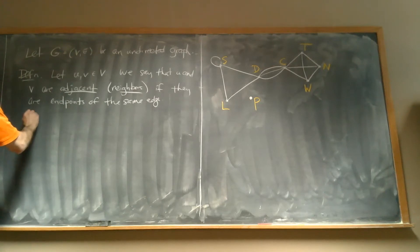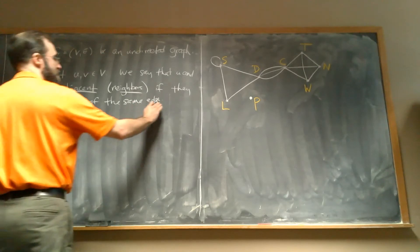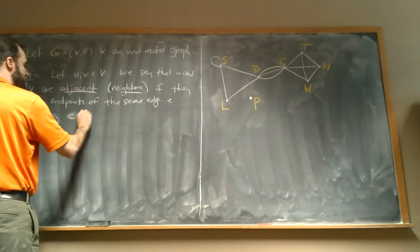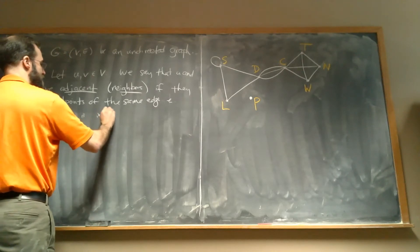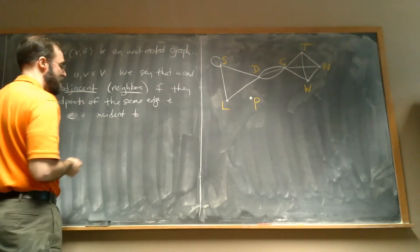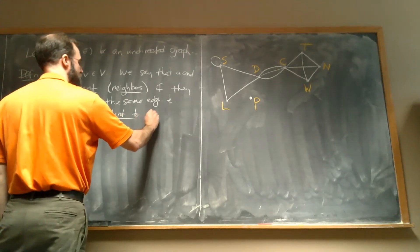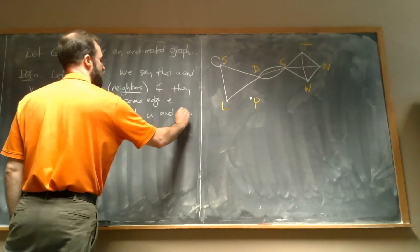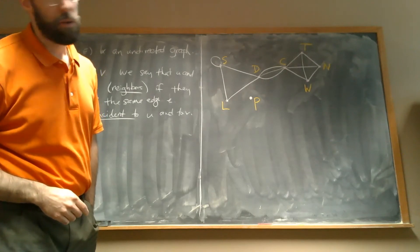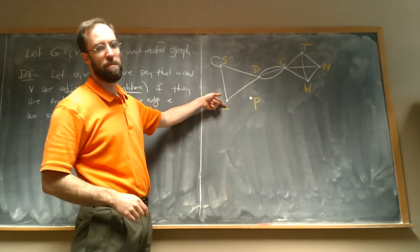We say that an edge E is incident to, or incident with, both of its endpoints. For example, this edge is incident to S and it's incident to L.